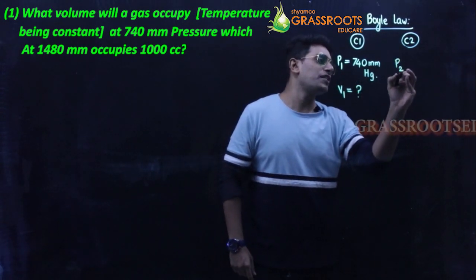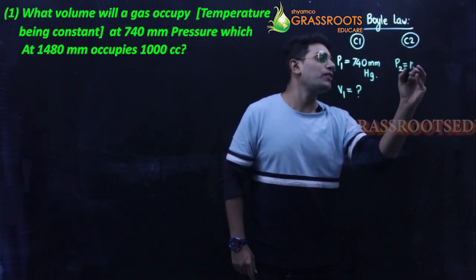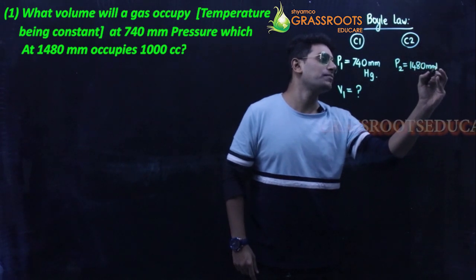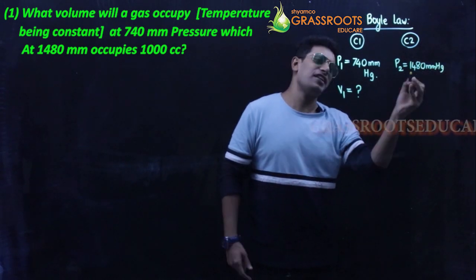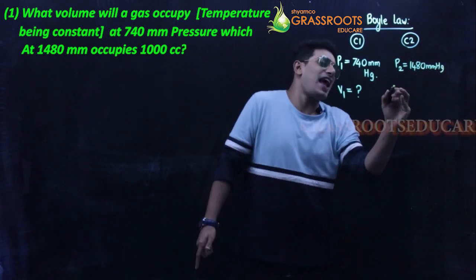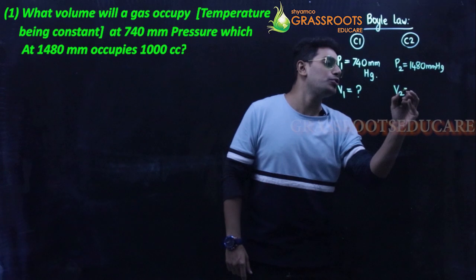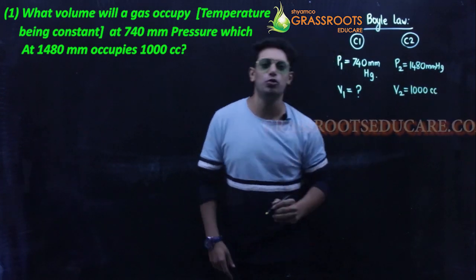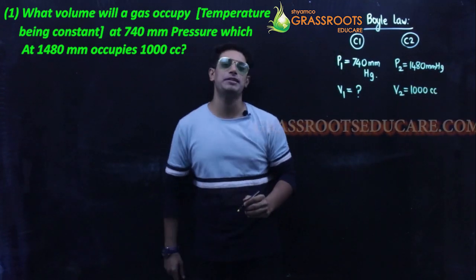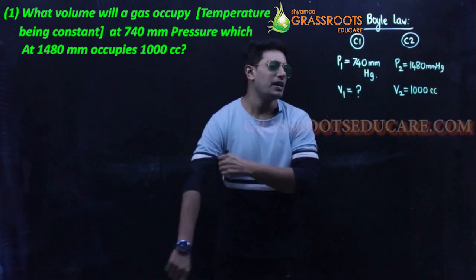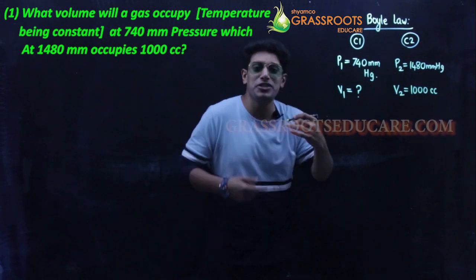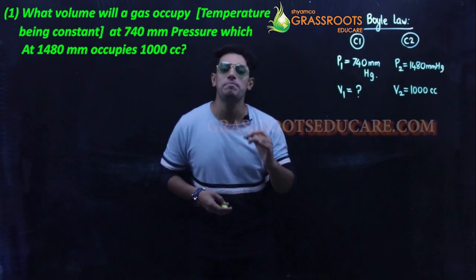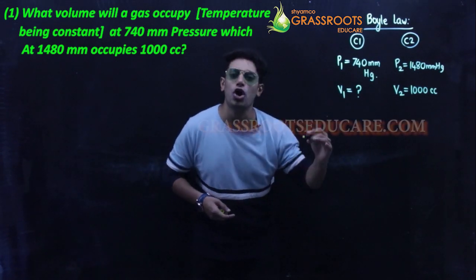Pressure two is given as 1480 mmHg, and volume two is 1000 cm³. I have been told temperature is constant.